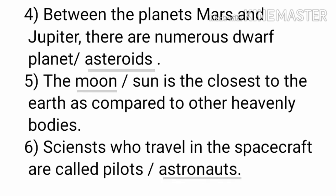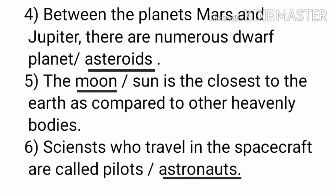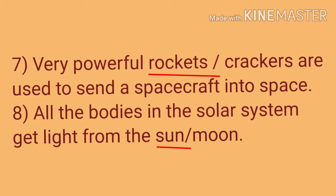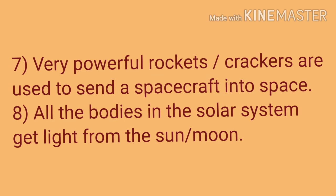Fourth: Between the planets Mars and Jupiter there are numerous drop planets or asteroids — answer is asteroids. Fifth: The moon or sun is closest to the Earth compared to other heavenly bodies — answer is moon. Sixth: Scientists who travel in spacecraft are called pilot or astronaut — answer is astronauts. Seventh: Very powerful rockets or crackers are used to send a spacecraft into space — answer is rockets. Eighth: All bodies in the solar system get light from the sun or moon — answer is sun.